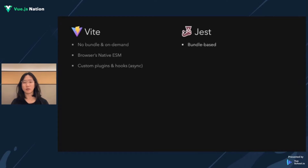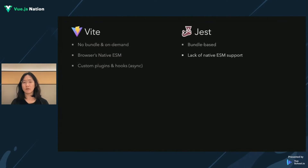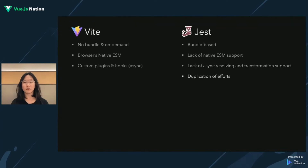As you know, Jest is a bundle-based test runner that has its own pipeline of transformation and resolving. The lack of native ESM support and async resolving make it hard to integrate with Vite. And since it has its own pipeline, every time you provide a custom plugin for Vite, it means you will also need to provide a Jest version.